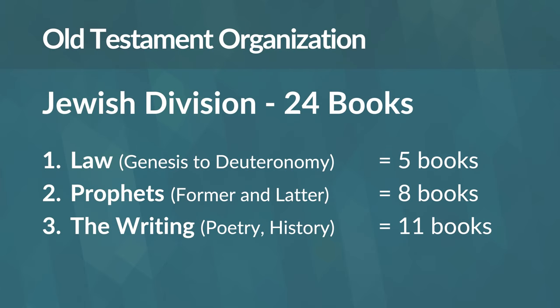The Jews organized the Old Testament differently than we do today, dividing it into three main sections. First, the Law — Genesis to Deuteronomy — of highest importance to the Jews. Second, the Prophets: the former prophets — Joshua, Judges, Samuel — each in their own volume; and the latter prophets — Isaiah, Jeremiah, Lamentations, Ezekiel, and all 12 minor prophets — together in one volume.